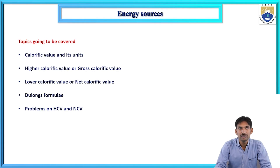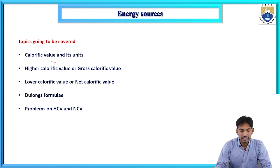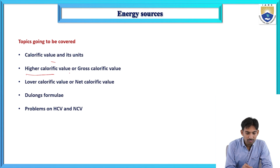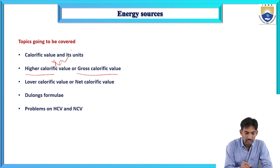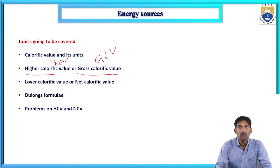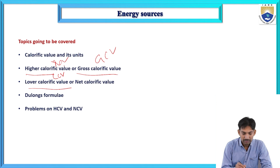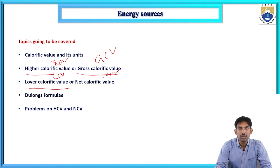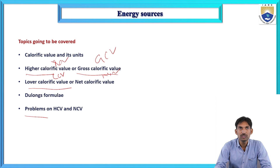In this session, I am going to cover these topics: higher calorific value and its units, higher calorific value or gross calorific value — HCV or GCV — lower calorific value or net calorific value — LCV and NCV — and DeLang's formula on LCV and NCV, and problems related to HCV and NCV are going to be solved.